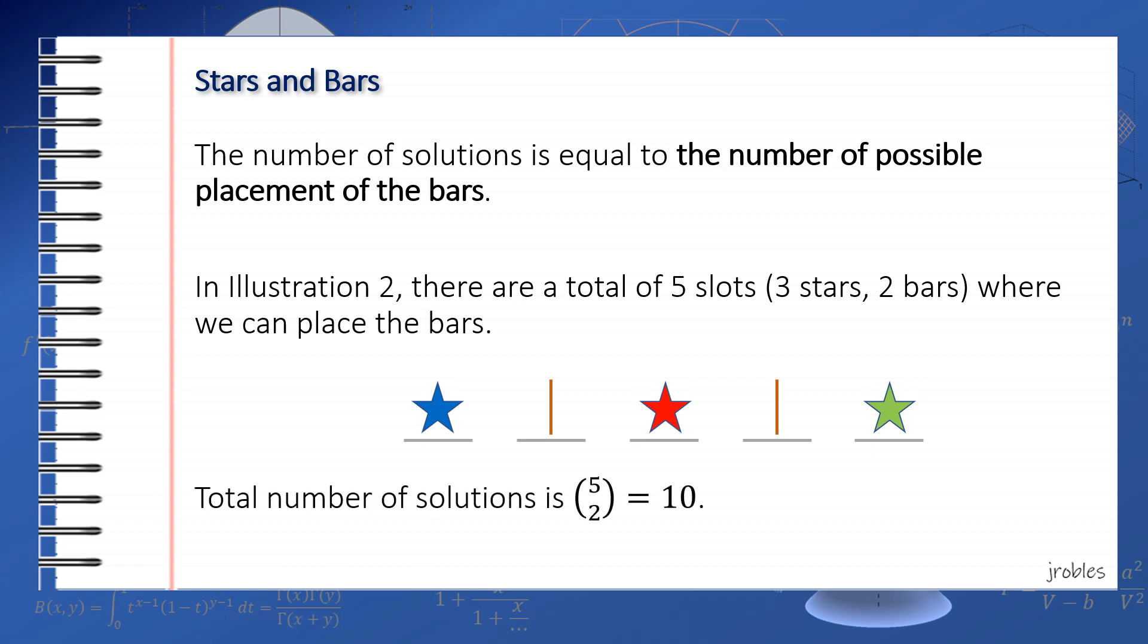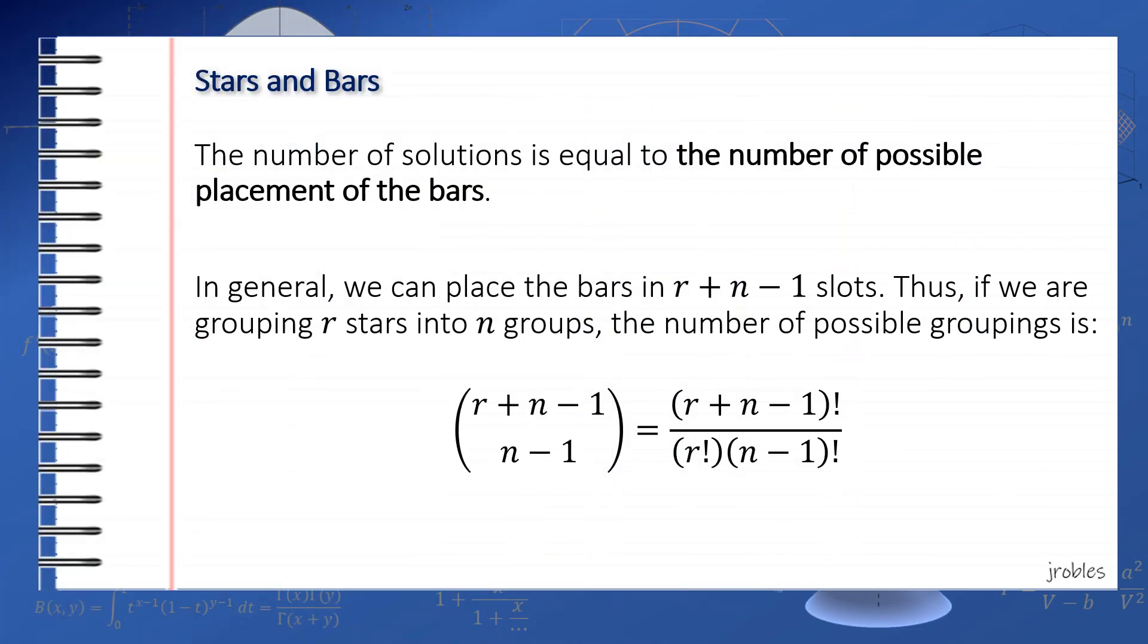So in general, if we intend to divide a set of r stars into n groups, there are a total of C(n+r-1, r-1) solutions. Of course, if we understand the idea clearly, we need not memorize the formula shown.